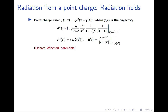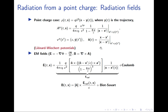These potentials for the point charge go by the famous name of Liénard-Wiechert potentials, obtained by French and German physicists in the late 1800s. From these potentials, we can find out the EM fields by using the map between potentials and fields. Once we have the potentials, it's straightforward to find the fields.